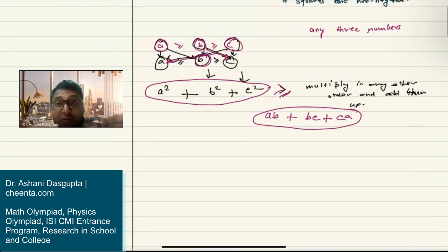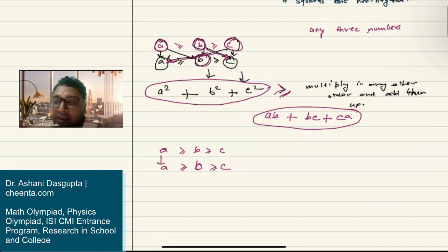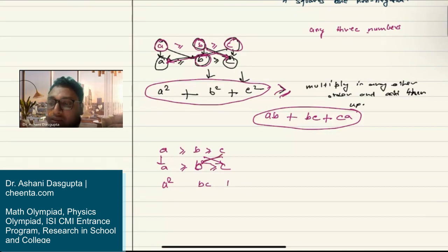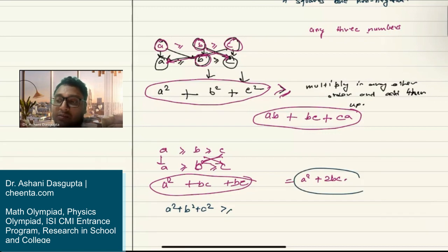In fact, the inequality says more. If you multiply in any other order — for example, a with a, b with c, and c with b — you get a², bc, and bc again, giving a² + 2bc. The rearrangement inequality says that a² + b² + c² will be greater than or equal to a² + 2bc.